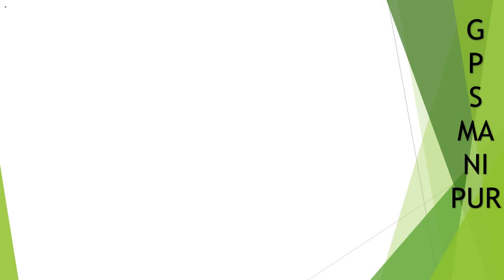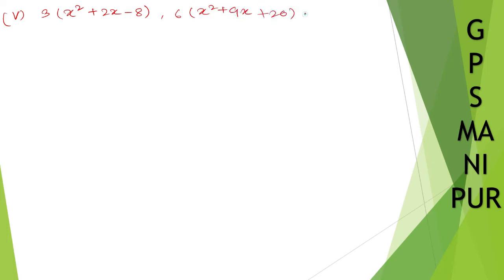Now we are doing exercise 2.4, question number 3, problem number 5. The question gives us three polynomials: 3x² + 2x - 8, 6x² + 9x + 20, and 15x² + x - 12. We need to find their solution.